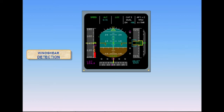If the FACs detect wind shear conditions, a red wind shear message is triggered on both PFDs, along with an aural 'wind shear, wind shear, wind shear' warning. Wind shear detection is available from liftoff to 1,300 feet at takeoff, and from 1,300 feet down to 50 feet during landing, provided the aircraft is in configuration 1 or higher.